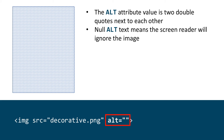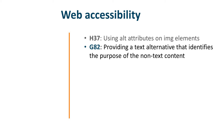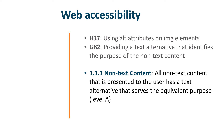Using null alt text means the screen reader will ignore the image. This is particularly useful if you have spacer images or images which are decorative. Providing alt attributes for images satisfies the HTML specific technique H37, using alt attributes on image elements, and the general technique G82, providing a text alternative that identifies the purpose of the non-text content. This means it passes 1.1.1 non-text content: all non-text content presented to the user has a text alternative that serves the equivalent purpose, at level A.